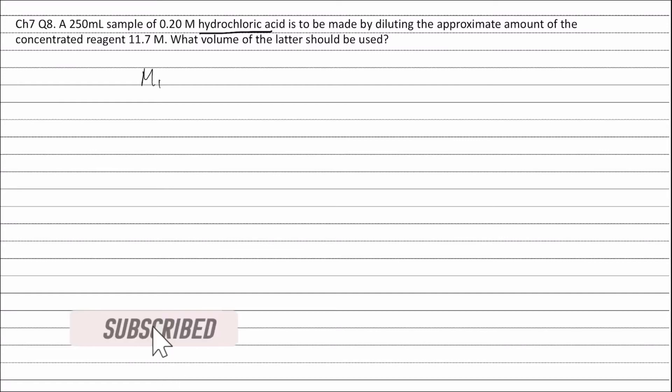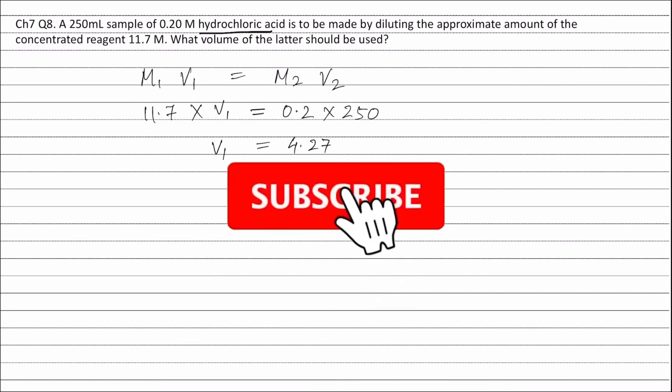Now, applying the formula M₁V₁ is equal to M₂V₂. M₁ is the molarity of the original solution that is 11.7 into V₁. V₁ is the volume that we have to find out is equal to molarity of the new solution that is 0.2 into V₂, which is 250 ml. Solving this equation, we will get the volume V₁ equals to 4.27 ml.